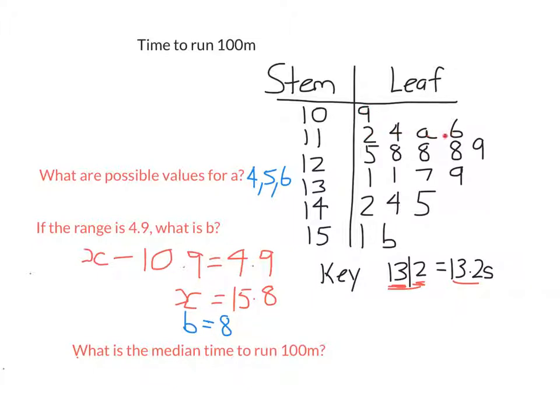So counting up, we have 1, 2, 3, 4, 5, 6, 7, 8, 9, 10. The 10th largest and the 10th smallest score is this one here, 12.9. You can see that there are 9 scores below it and 9 scores above it. So the median is that score. So just make sure you're careful because a lot of people say, oh, the median's 9. It's not 9. This score represents 12.9.